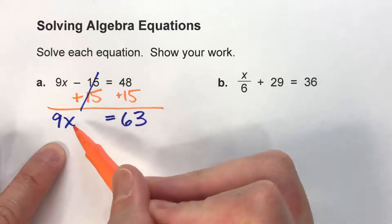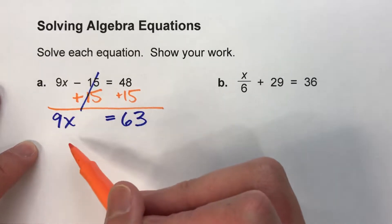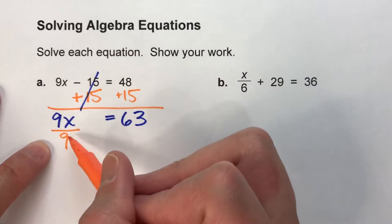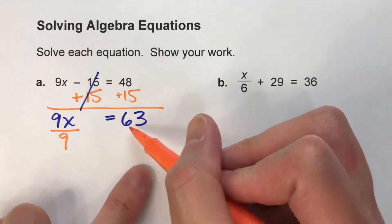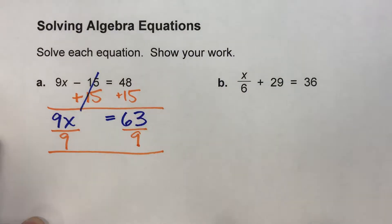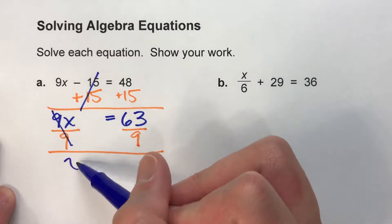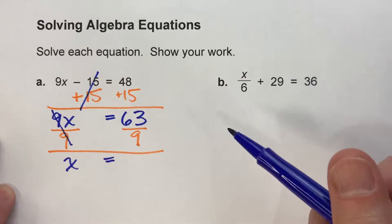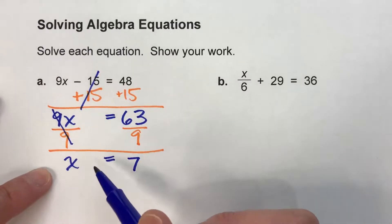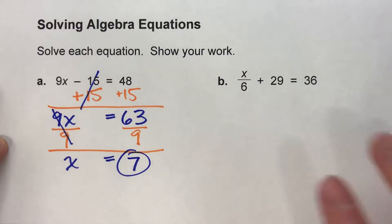Now we've got x, and it said we multiplied x by 9. So to undo multiplying by 9, we're going to divide by 9. What we do to one side of the equal sign, we have to do to the other side. Multiplying and dividing by 9 undo each other, and all that's left is x. Then 63 divided by 9 is 7, and we're left with the statement that x equals 7. So x must be 7.